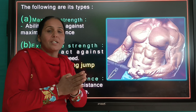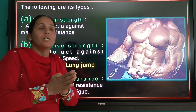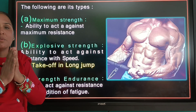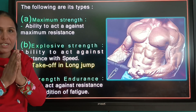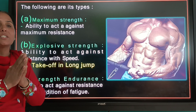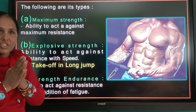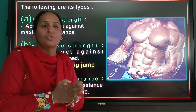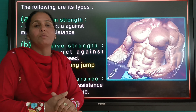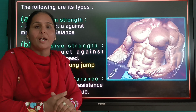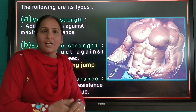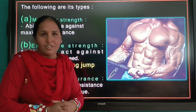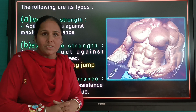What is our static strength? We are pushing the wall — it is the best example of static strength. We do not change the muscles. Static strength is the isometric strength.